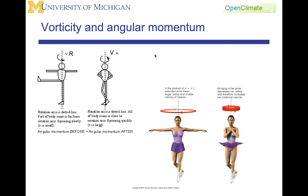Vorticity is very closely related to angular momentum in both its concepts and its behavior. A frequent comparison that is used is a skater. When the skater holds out her arms, she rotates relatively slowly. When she brings in her arms, she rotates more rapidly. This phenomenon of the skater rotating more rapidly as she brings in her arms and aligns her legs along the axis of rotation is a consequence of the conservation of angular momentum.